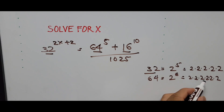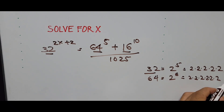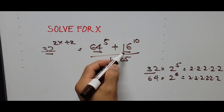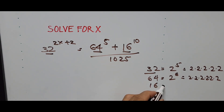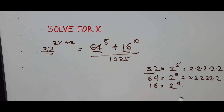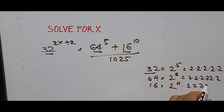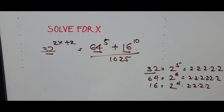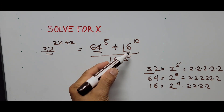So 2 times 2 is 4, times 2 is 8, times 2 is 16, times 2 is 32, times 2 is 64. So we have to replace those numbers.